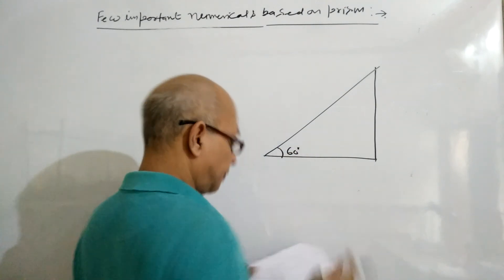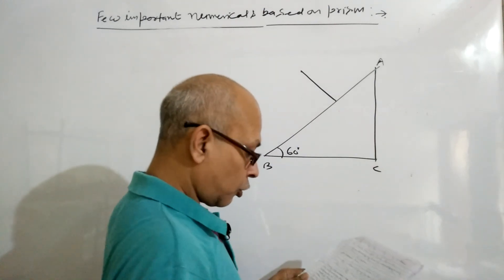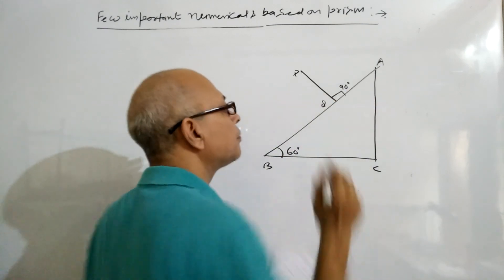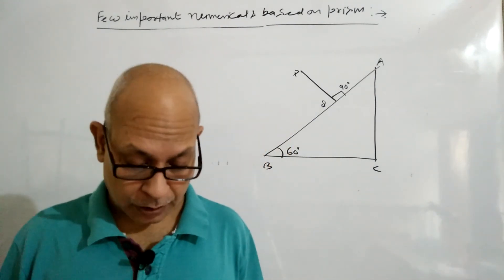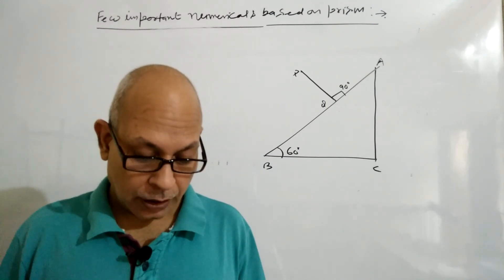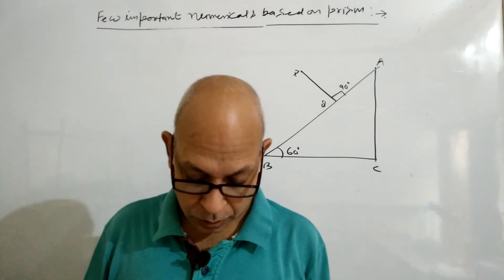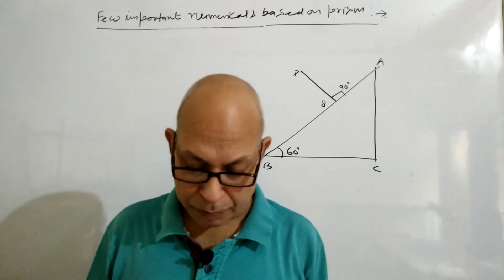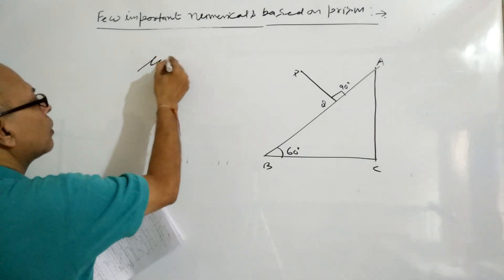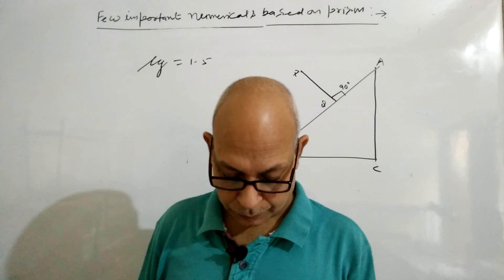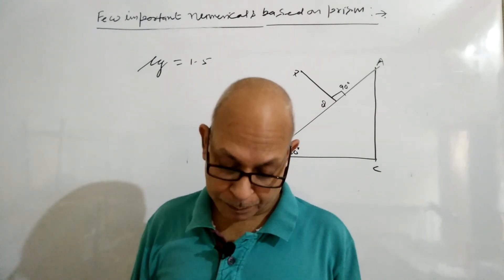Here the angle is 60°. ABC is the prism and the ray PQ is incident at 90°. The prism is made of material of refractive index 1.5. The question asks: complete the path of the ray through the prism and from which face will the ray emerge? Justify your answer.